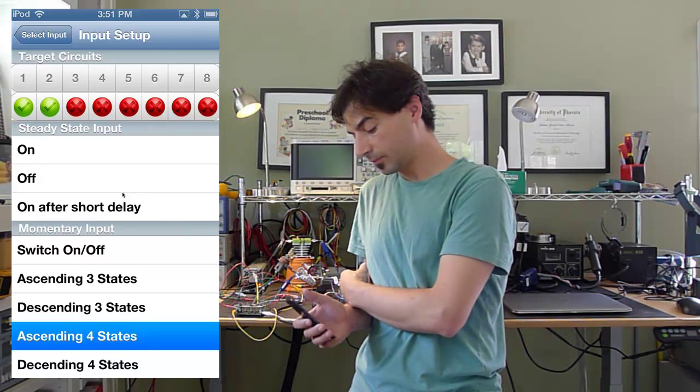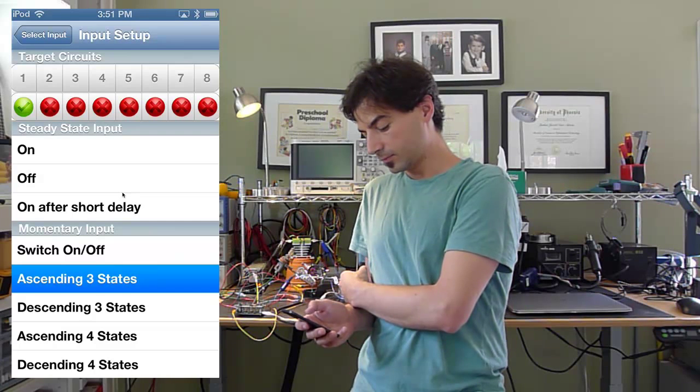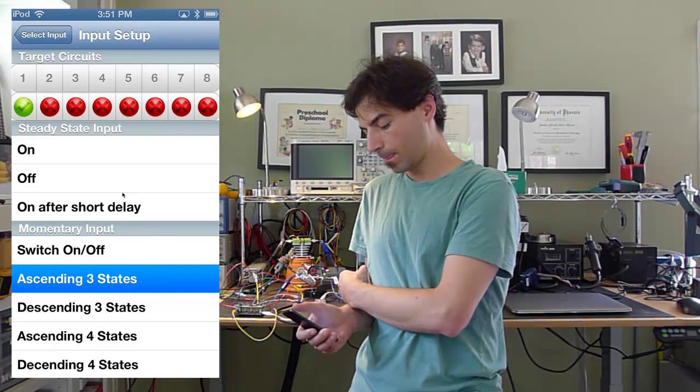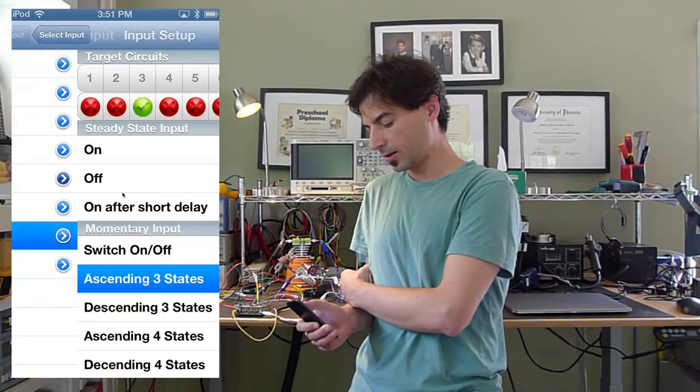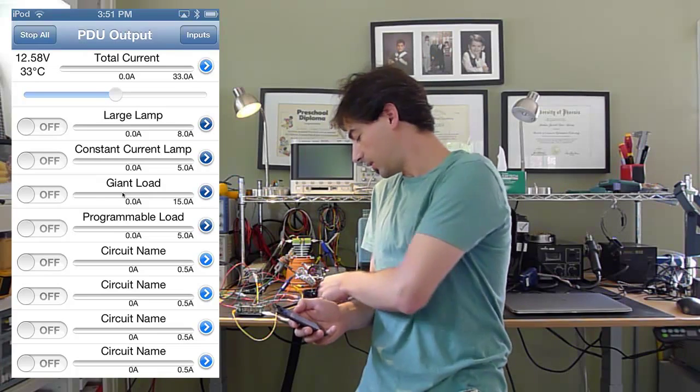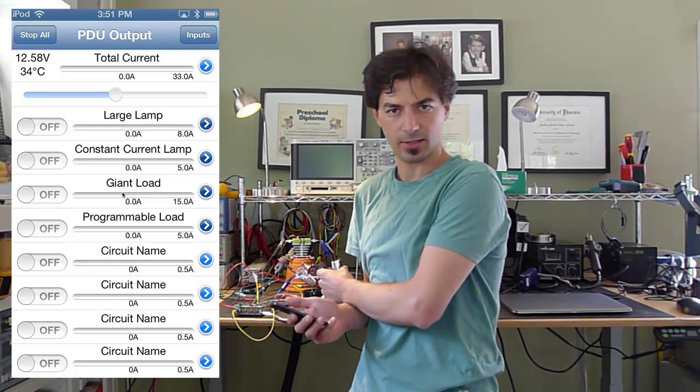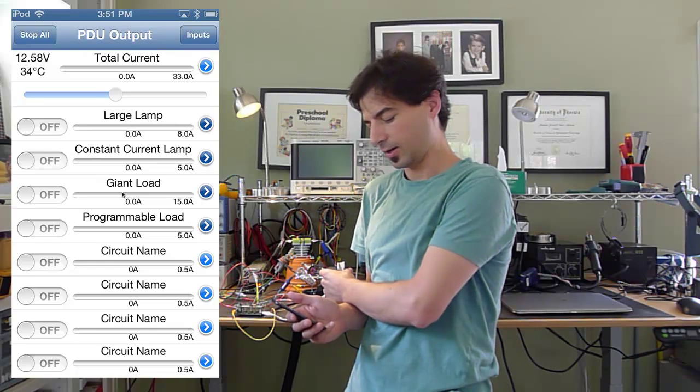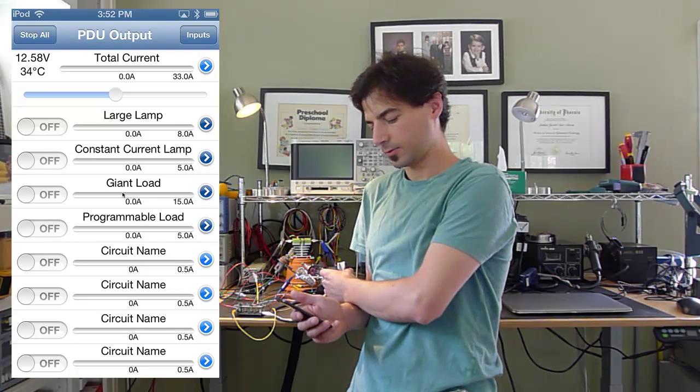And there are eight of those. They're all the same, so we can certainly set this up. Yeah, let's do this one here. Three states. We'll do channel three. Channel three is this big resistor here, and it's attached to a 15-amp circuit. It's called giant load, and this would be analogous to all of your heated gear, which should be about 12 amps. At least that's how I got it set up on my bike.